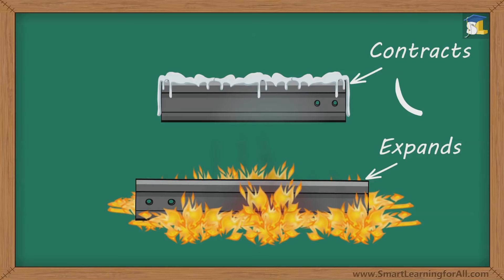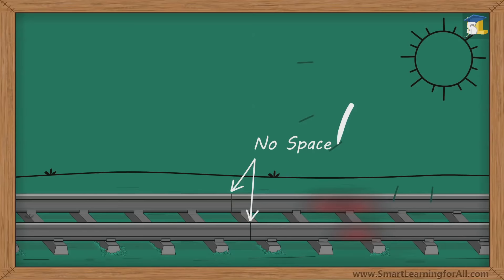When the rails are joined to one another without leaving any space for expansion, the rails bend due to thermal expansion and the train goes off the railway track.